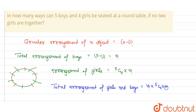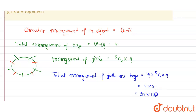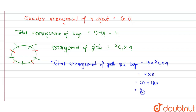Total arrangement of girls and boys will be 4! × 5C4 × 4!. Now 5C4 equals 5, so 5 × 4! equals 5 factorial. Therefore the total is 4! × 5! = 24 × 120 = 2880. So total arrangements equal 2880.